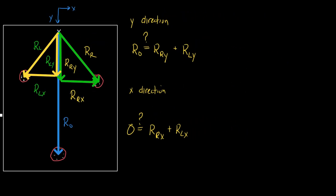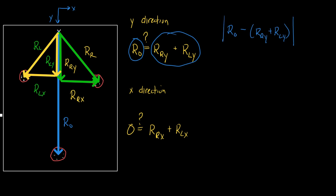We're trying to see how far apart R-naught is from the sum. Take R-naught and subtract the sum — that's how different the two numbers are. Take the absolute value of that because we don't care whether it's positive or negative; we just want to know how far apart they are. Then divide by the average of those two things, and write this as a percentage. If they're different by less than 5%, you've shown conservation of momentum in the Y direction.